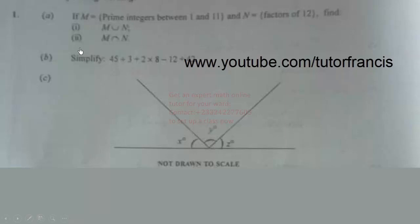Now, the first part of Question 1a: If M is equal to prime integers between 1 and 11, and N is equal to factors of 12, find i) M union N, and ii) M intersection N.